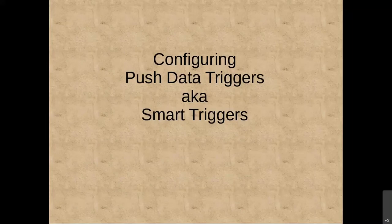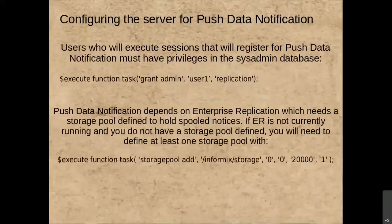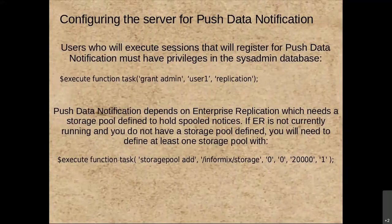Configuring Push Data Triggers or Smart Triggers is also rather simple. The first thing you need to do is ensure the user has admin privileges in the sysadmin database. You execute the API function grant_admin to the username — in this case user_one — for replication. That grants admin privileges on the sysadmin database to that user so it can be a client to capture push data. Since it uses enterprise replication, it will spool notifications into a DB space in case your application is not currently connected.